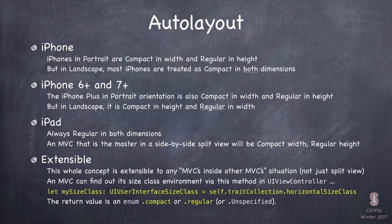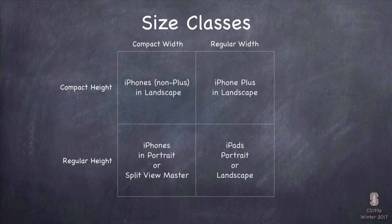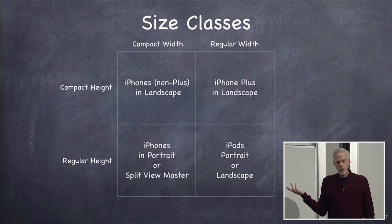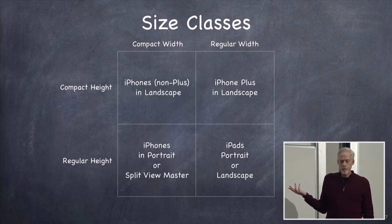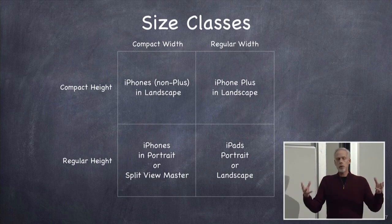There's a var called traitCollection you can look at in a view controller — it'll tell you your current size class both horizontally and vertically. So we have the size classes: compact width and regular width, compact height and regular height, making four combinations. Compact width and height is iPhones in landscape (not Plus). Compact height and regular width is iPhone Plus only in landscape. Regular height and compact width is iPhones in portrait — both Plus and regular — and also like a split view master. Regular/regular is iPad in portrait or landscape, the full screen.